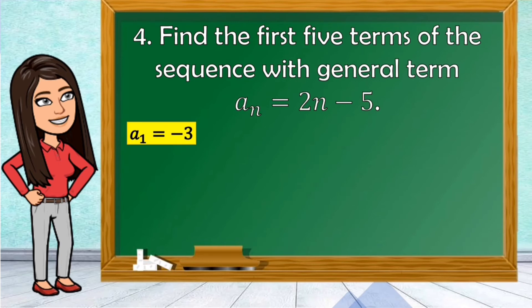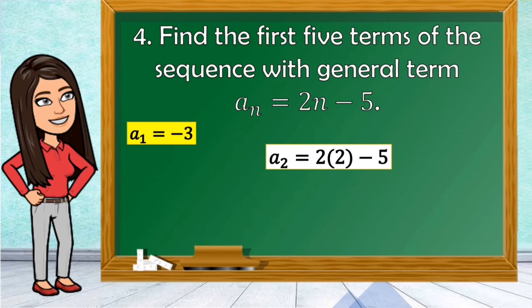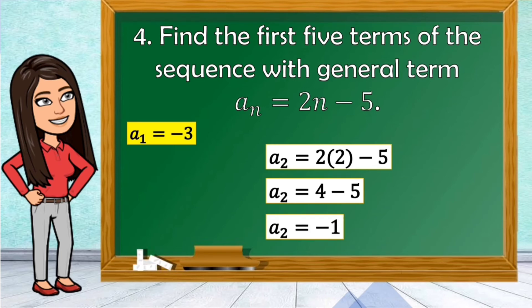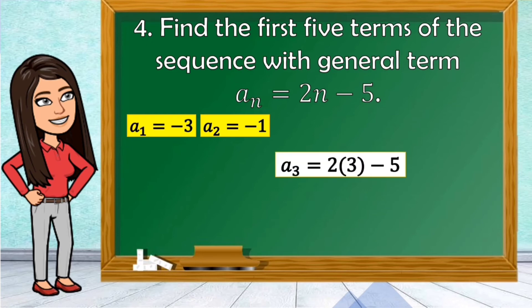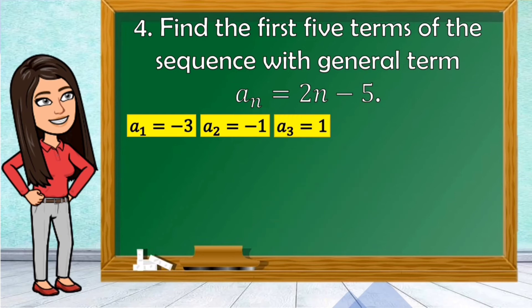So the first term is negative 3. To get the second term, substitute n equal to 2: a sub 2 is equal to 2 times 2 minus 5, so 4 minus 5, and a sub 2 is equal to negative 1. The second term is negative 1. To get the third term, substitute n equal to 3: a sub 3 is equal to 2 times 3 minus 5, which is 6 minus 5, and 6 minus 5 is 1. The third term is 1.